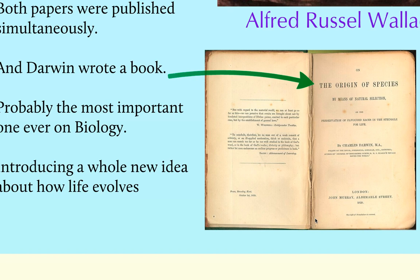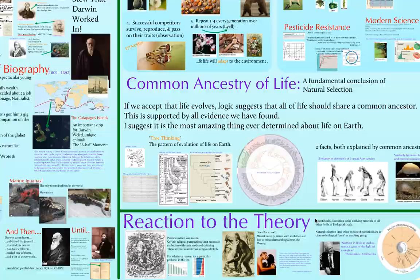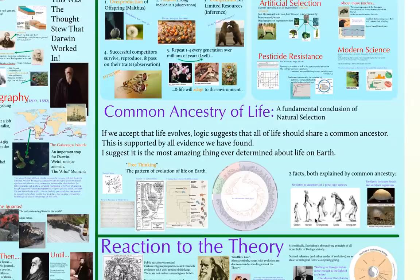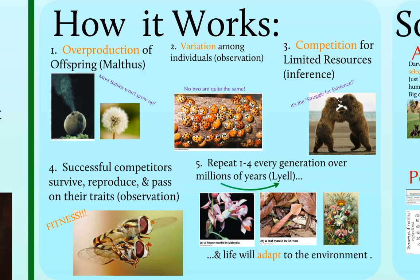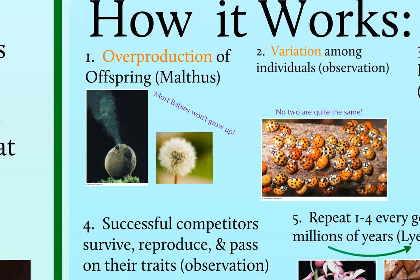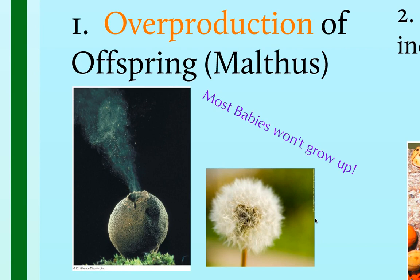Let's talk about what natural selection actually says. If you're going to write anything down today, you need to write down these five steps and some details about them. First, Darwin says there's overproduction of offspring — all organisms are having too many babies, whether that's too many little seeds from a dandelion, spores from a fungus, cottonwood seeds in the springtime, or baby fish like in Finding Nemo. They're having too many babies and many of them don't survive.